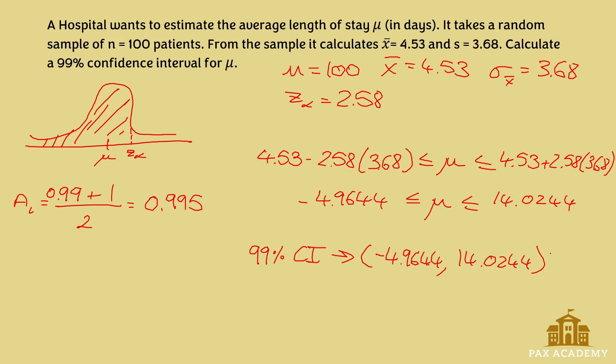What this means is that we're 99% confident that the population mean is going to be between these two values. That'll be it for today's video. Let me know in the comments if you have any questions and I'll be happy to answer them.